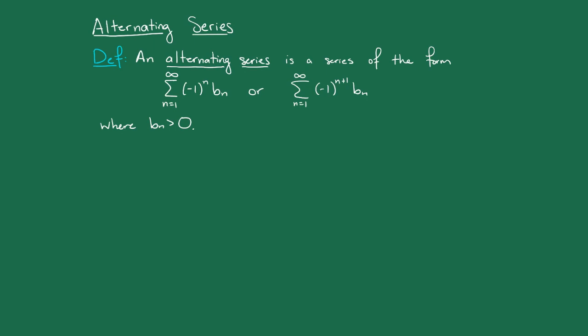Now, why are series of these forms called alternating? Well, the minus 1 to the n, or minus 1 to the n plus 1, will switch, or alternate, between negative 1 and 1. So since the bn's are positive, the terms in these series will alternate between positive and negative. That's why we call these series alternating.